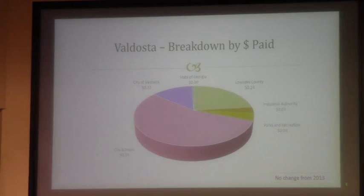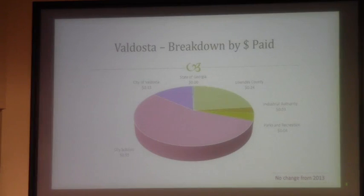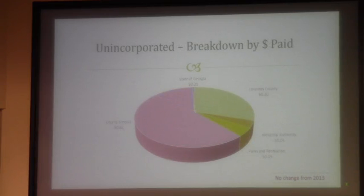The next two slides show a breakdown of where every dollar of property tax paid goes. If you are inside the city of Valdosta, for every dollar you pay, $0.55 goes to the school system, $0.13 goes to the city of Valdosta, and $0.24 goes to Lowndes County. If you are in the unincorporated area, for every dollar that you pay, $0.61 goes to the school board and $0.30 goes to Lowndes County.